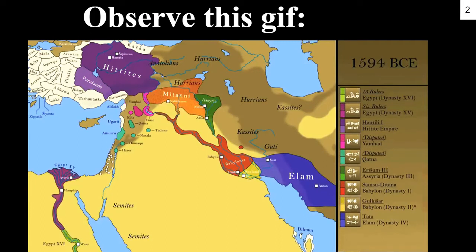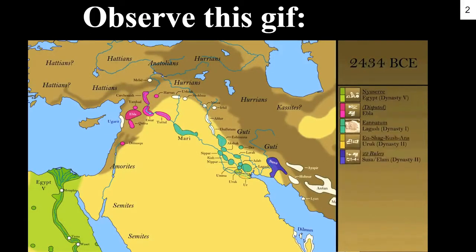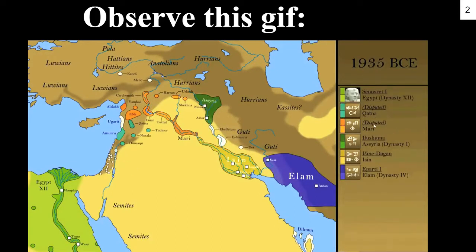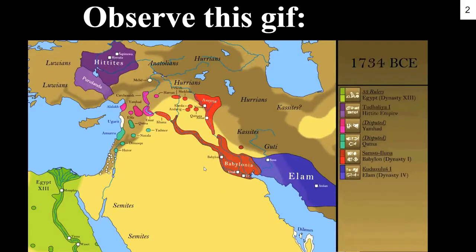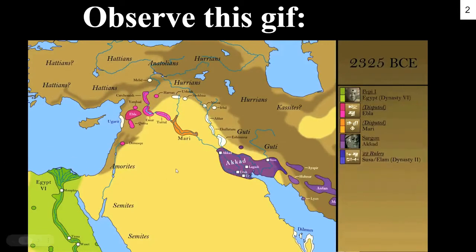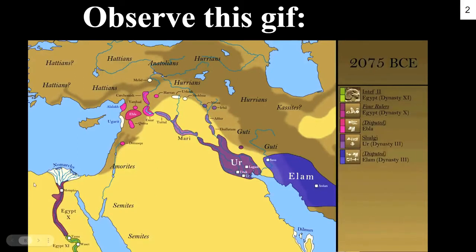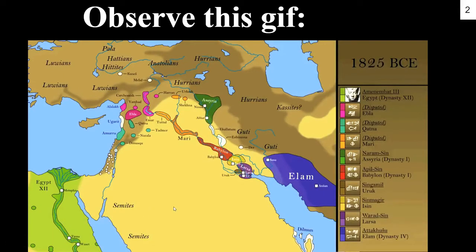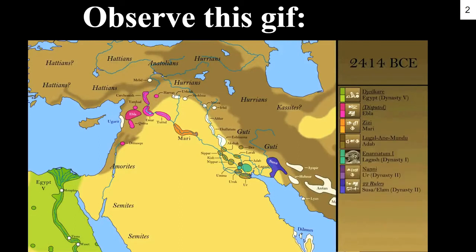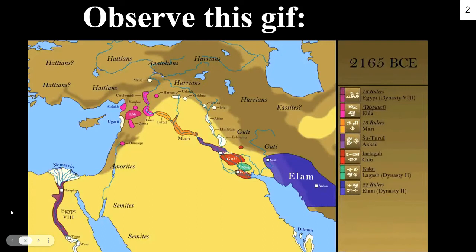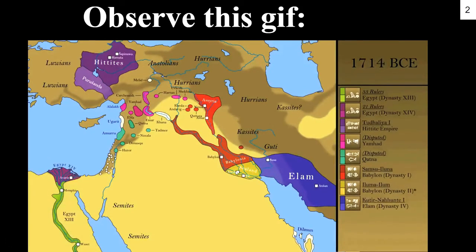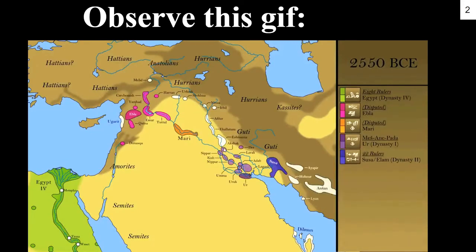Now I need you to put your thinking cap on by observing this GIF. To help guide you, look at the keys on the right side. On the top right corner you can also see the timeline. Look at the area of Egypt and Mesopotamia. The key on the right side represents nations — each color represents various city-states or nations. Over in Mesopotamia you see a lot of city-states, but over in Egypt it's just one nation. Egypt is a lot bigger than many of these city-states in Mesopotamia. Also, looking at the timeline, you can see that the city-states are changing a lot faster than Egypt. So why is that?